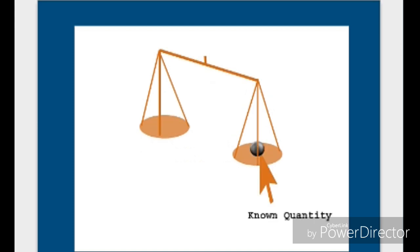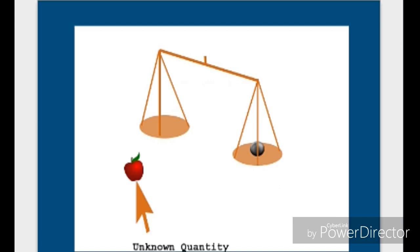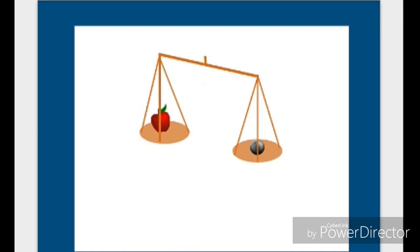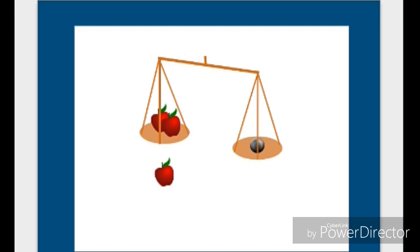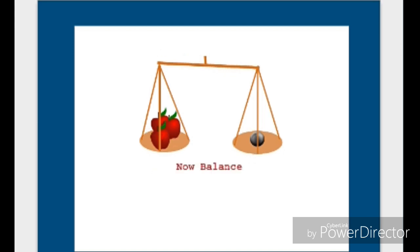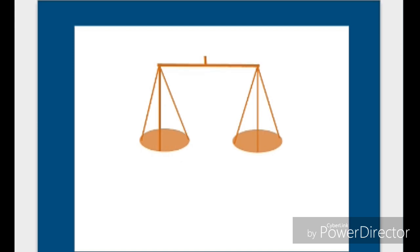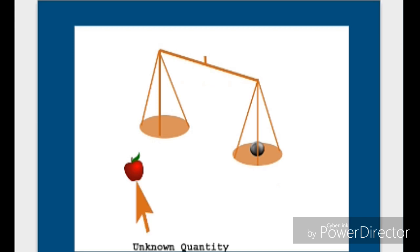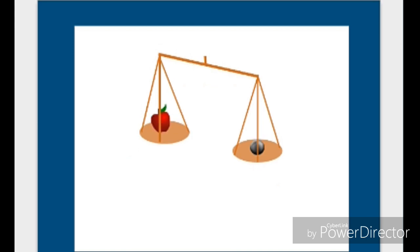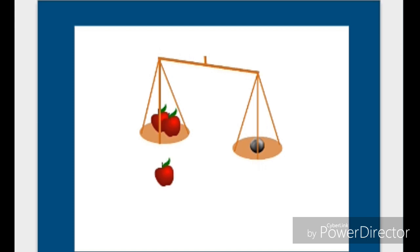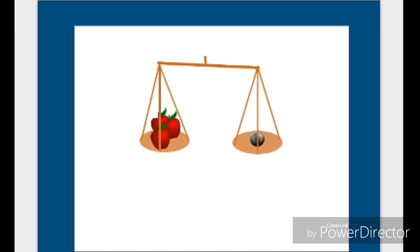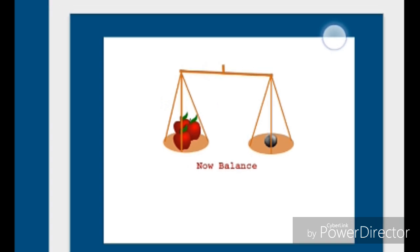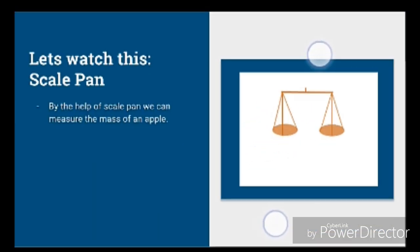The known quantity is 1 kg. The apple is the unknown quantity. We add the apple on the left side of the scale pan until it is balanced. Then we can say the apple is 1 kg. This is an example of how we can measure an unknown quantity.